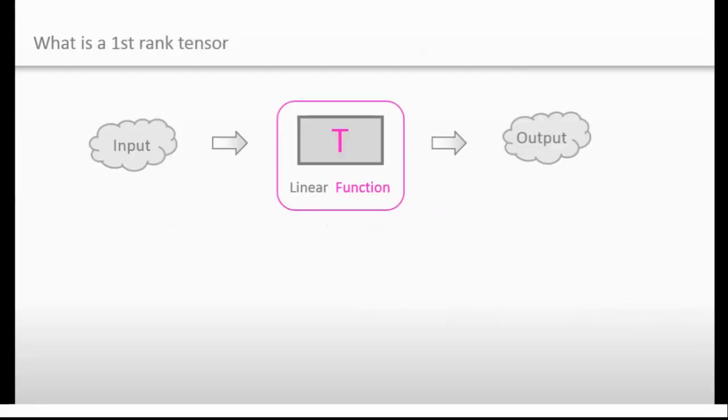This is a chart showing what a first-rank tensor is. This is a first-rank tensor because this function has only one input. If this function has two inputs, the function will be a second-rank tensor.